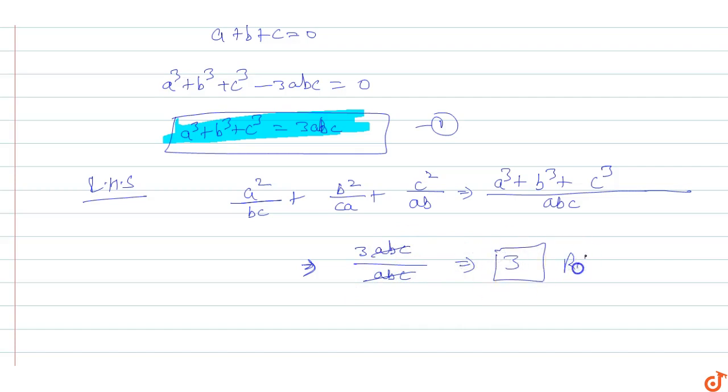abc and abc cancel out, so this is equals to three. Okay, this is our RHS. So we have proved that a square upon bc plus b square upon ca plus c square upon ab equals to three.